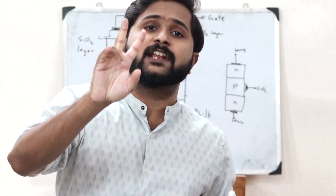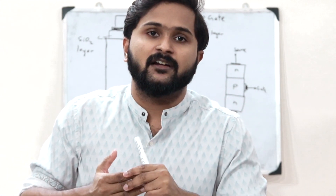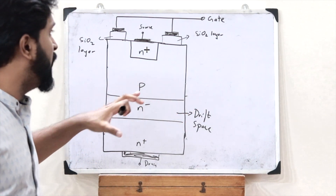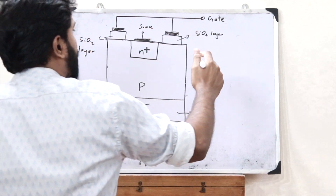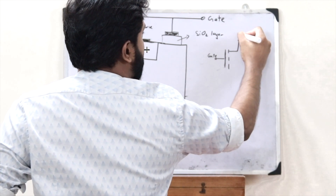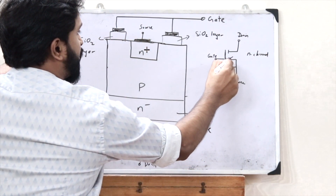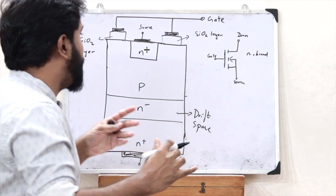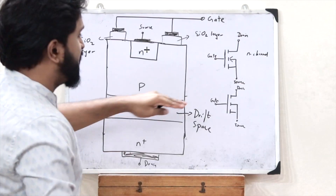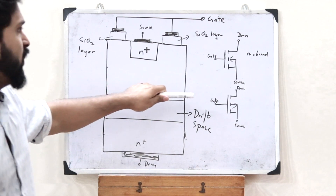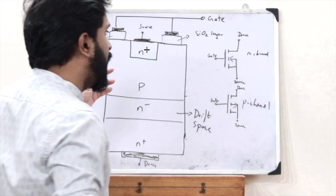There are two types of MOSFETs: an n-channel MOSFET and a p-channel MOSFET. Depending on the type, there are two different symbols. The symbol of an n-channel power MOSFET has a gate, a drain, and a source, and because it is an n-channel, the source has an arrow pointing inward. For a p-channel power MOSFET, it is the same symbol but the only difference is that the arrow goes outward. That is the difference between the symbols of an n-channel and a p-channel power MOSFET.